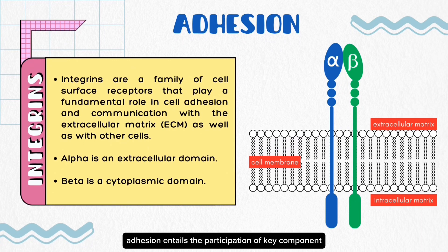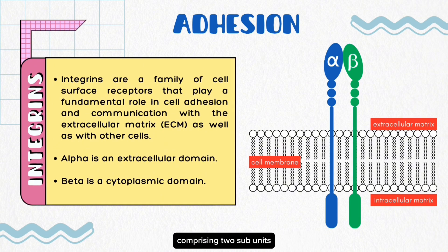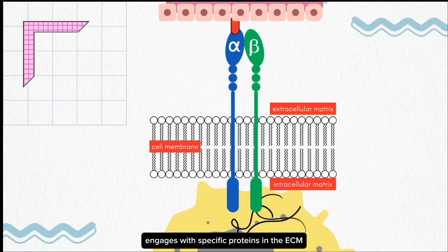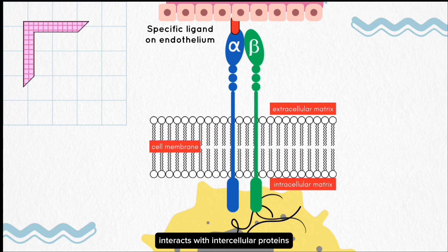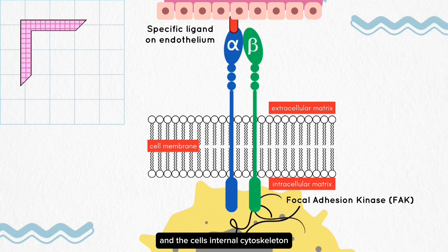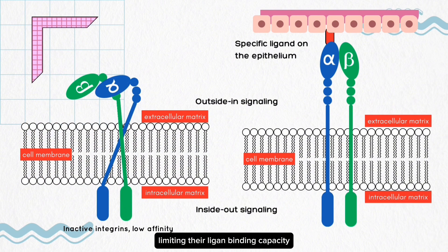In the second step, adhesion entails the participation of key components: integrins and galectins. Integrins, functioning as cell adhesion receptors, selectively bind to specific ligands on the endothelium, comprising two subunits — alpha and beta. The alpha subunit constitutes the extracellular domain and beta forms the cytoplasmic domain. The extracellular domain engages with specific proteins in the ECM, while the cytoplasmic domain interacts with intracellular proteins such as focal adhesion kinase (FAK), establishing a connection between the integrin and the cell's internal cytoskeleton. In their inactive state, integrins often adopt a bent or closed conformation, limiting their ligand-binding capacity.